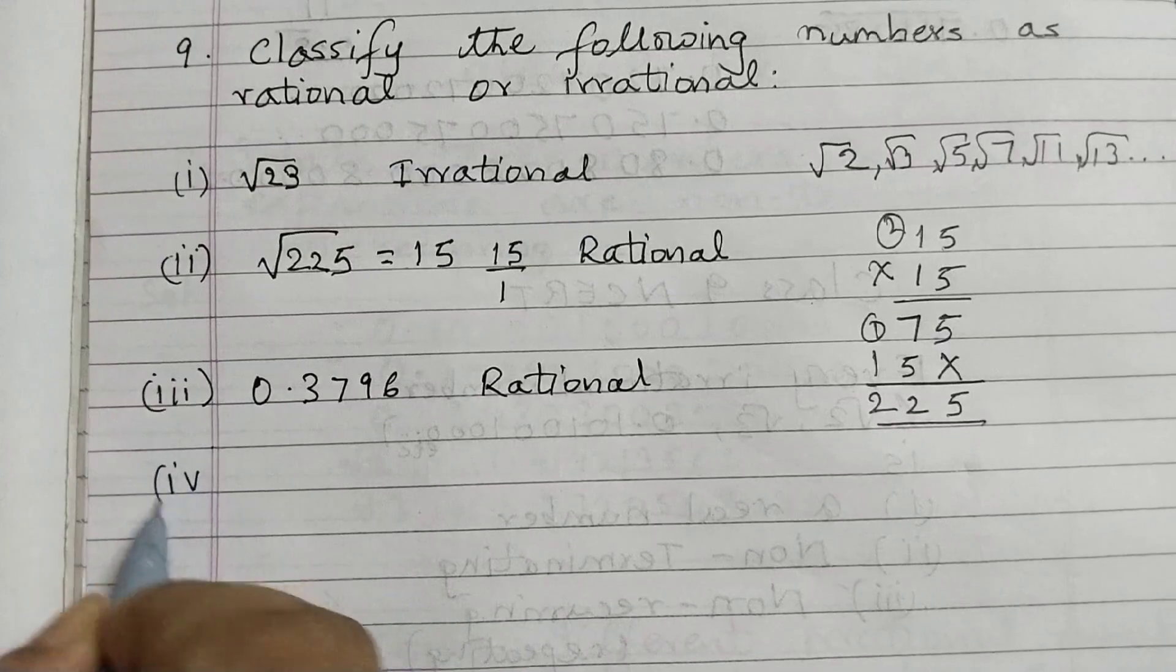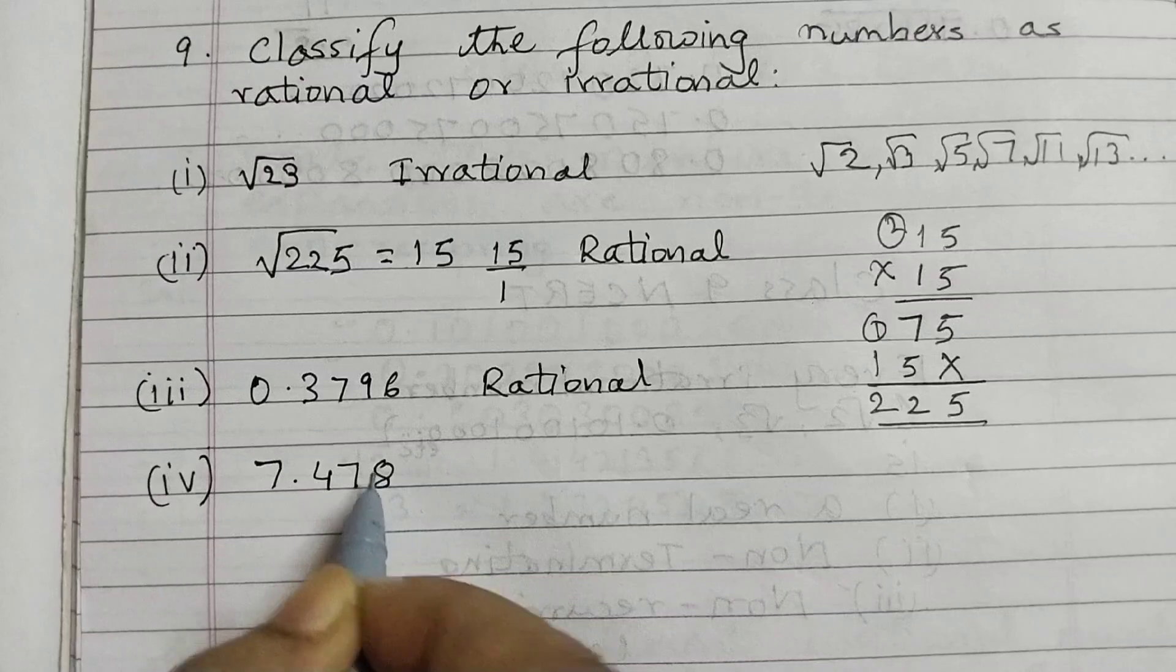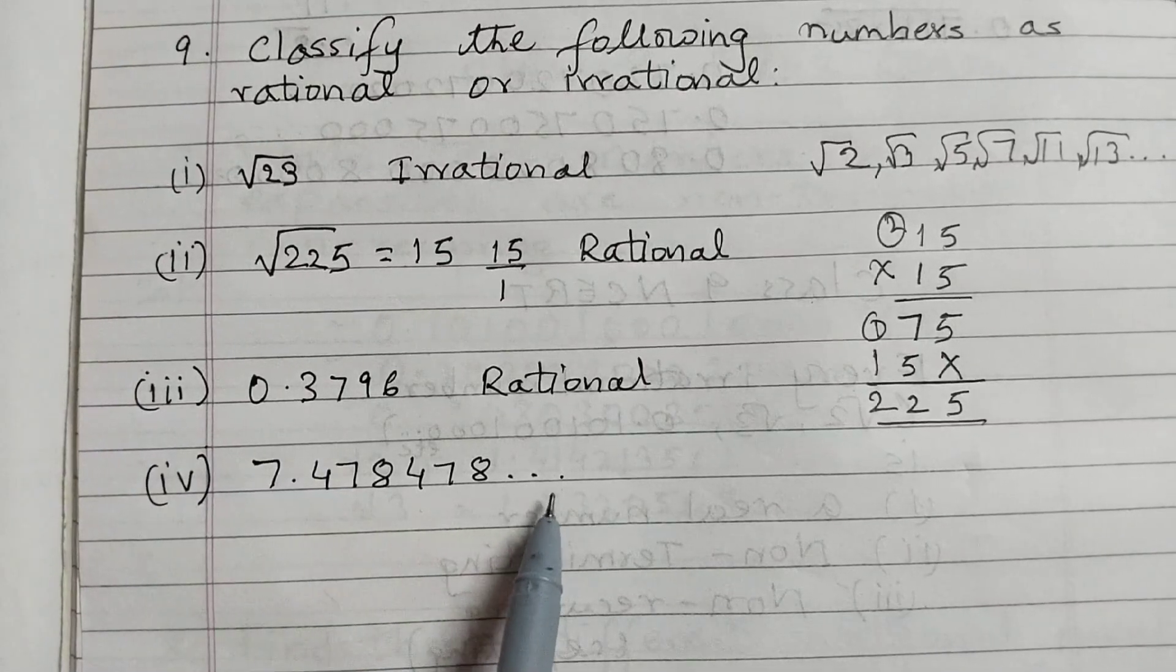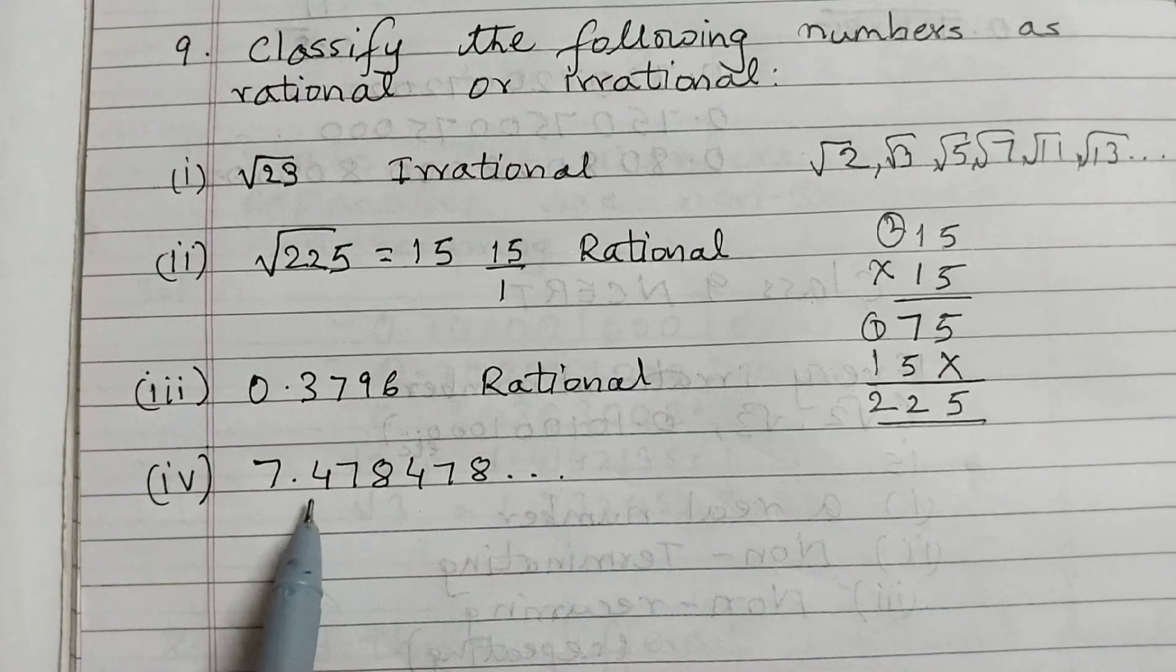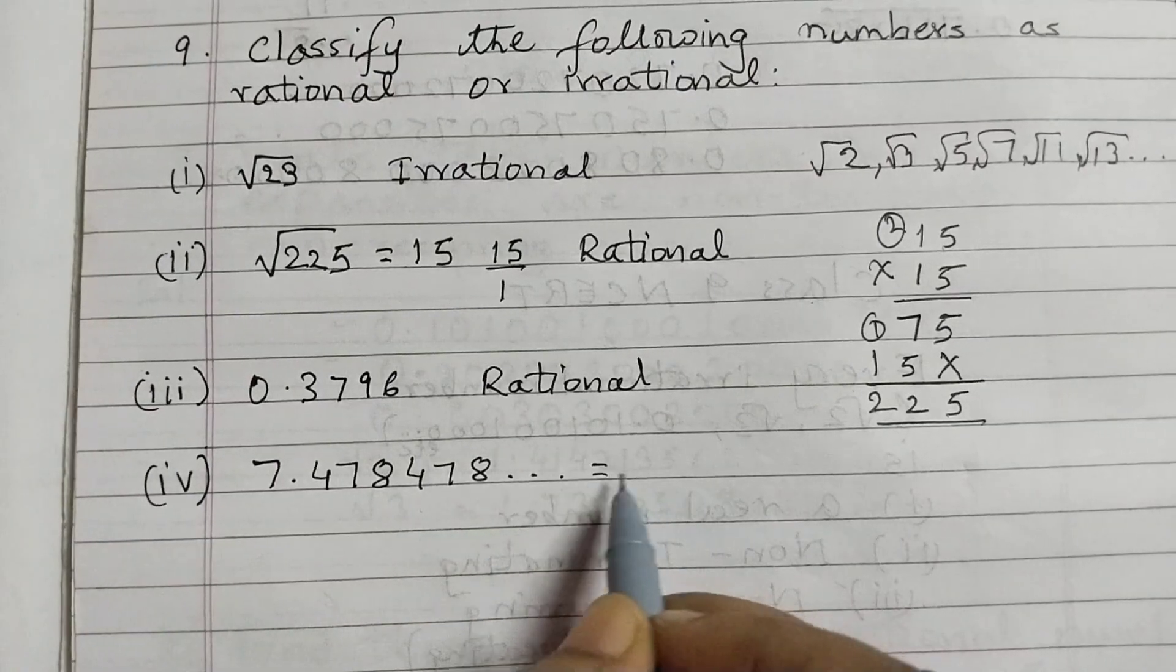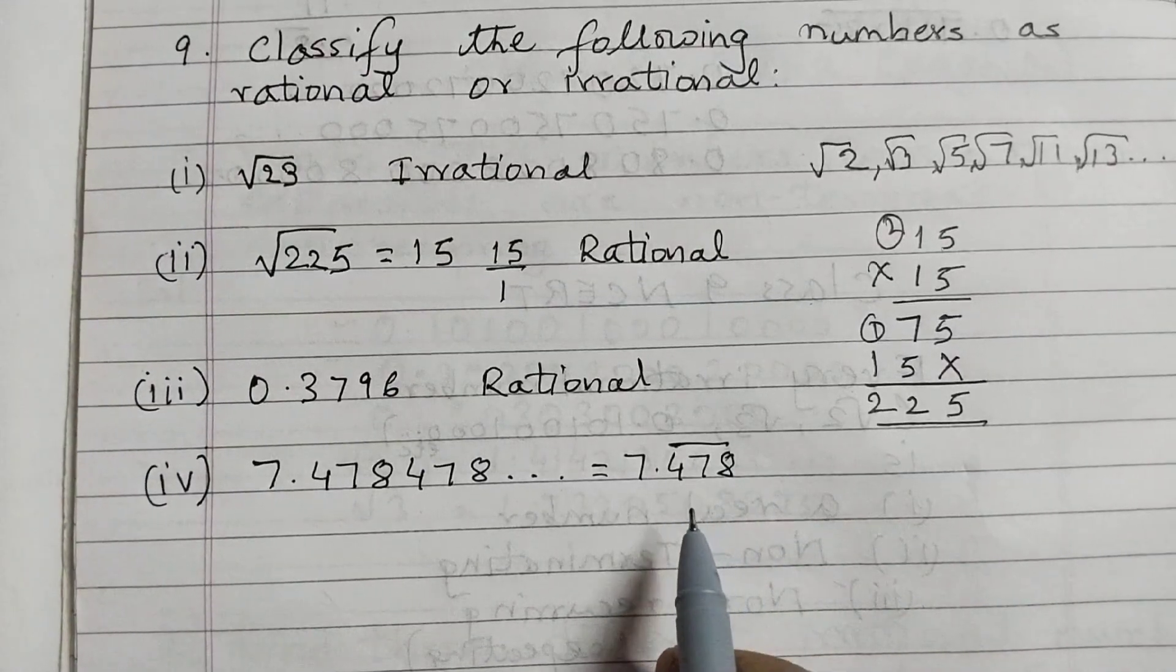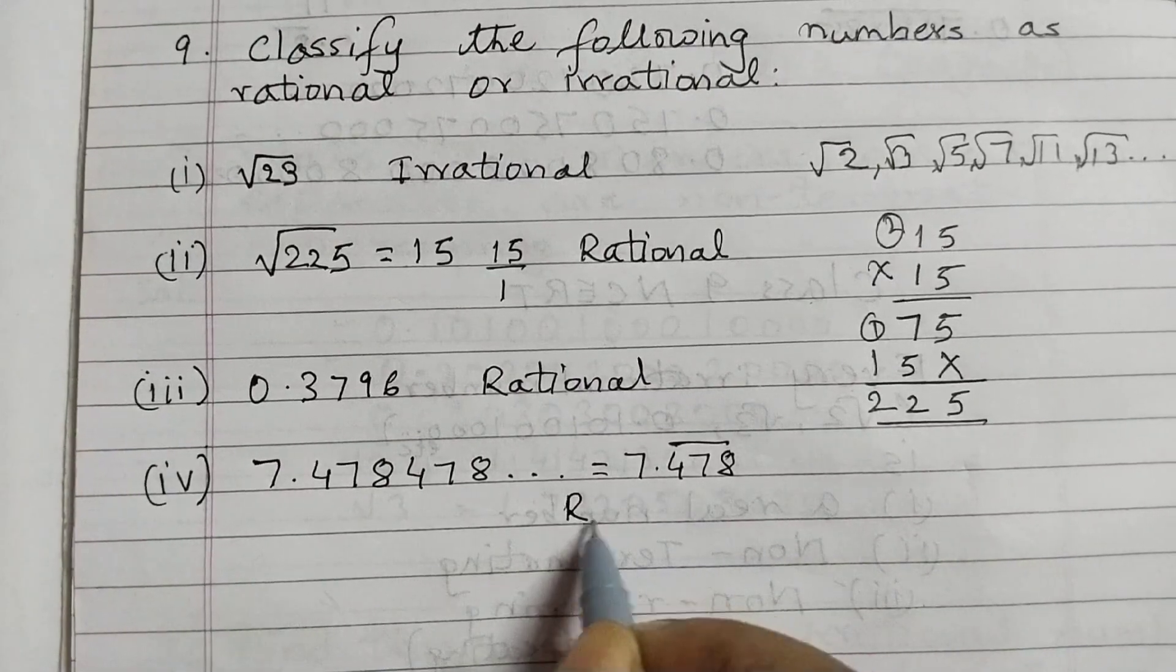Fourth one, 7.478 dot dot dot. Now this one is a non-terminating decimal expansion. These 3 dots show that the division goes on forever. However, this block 478 is repeating again, so we can write this as 7 point 478 bar, showing that this block is repeating. So this is a non-terminating recurring decimal expansion, which means this is a rational number.